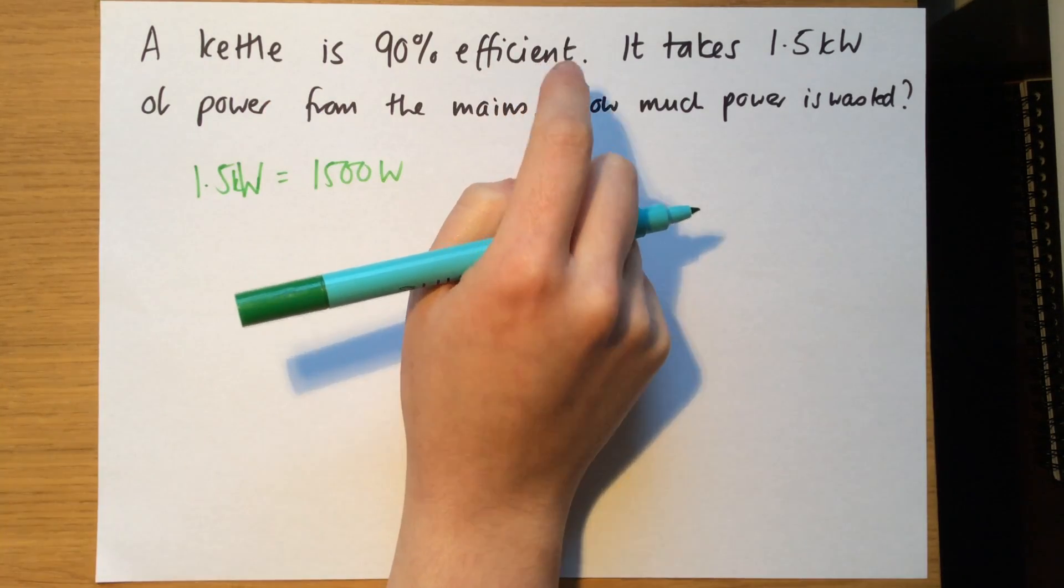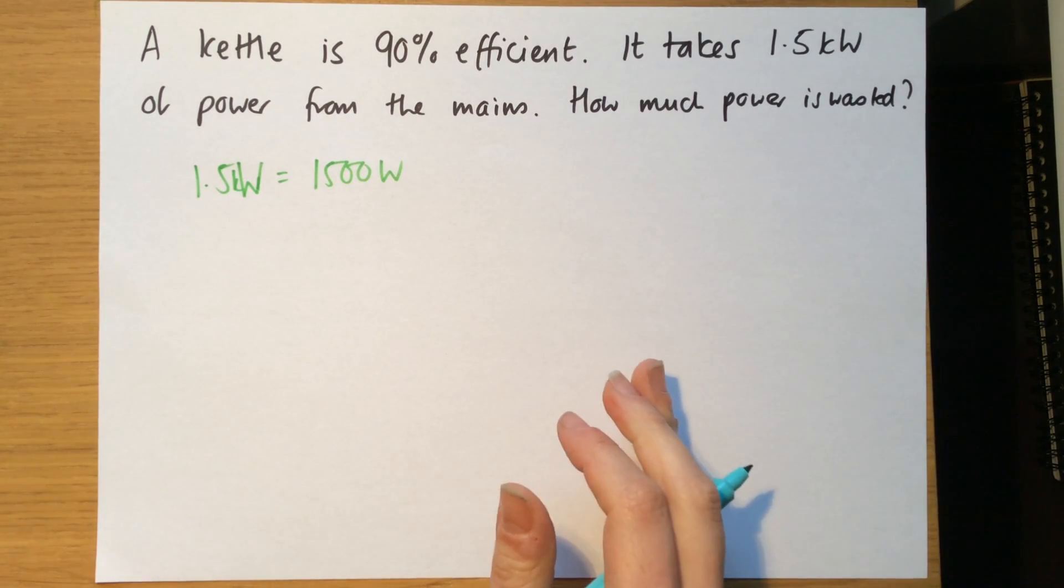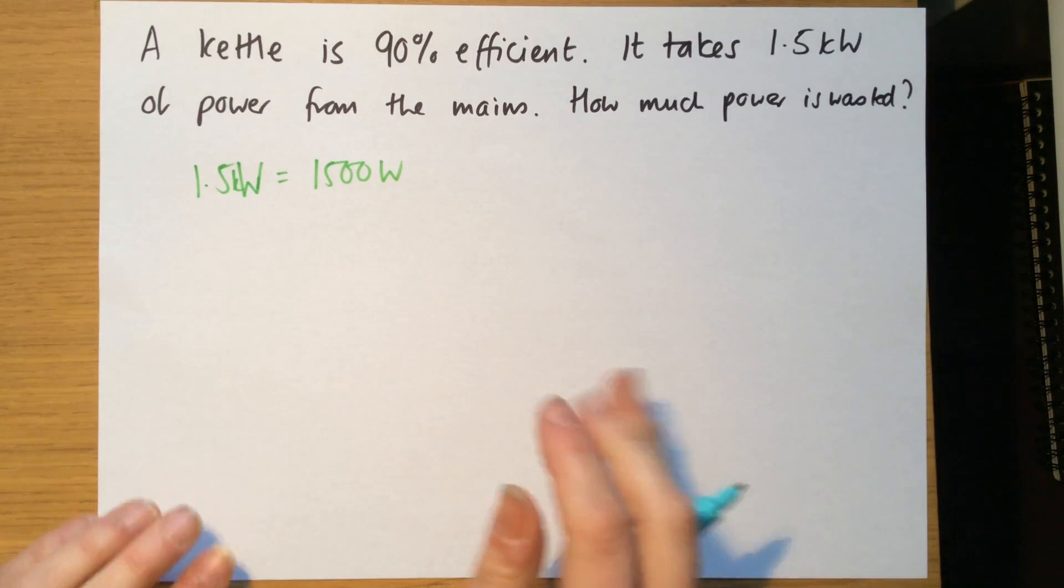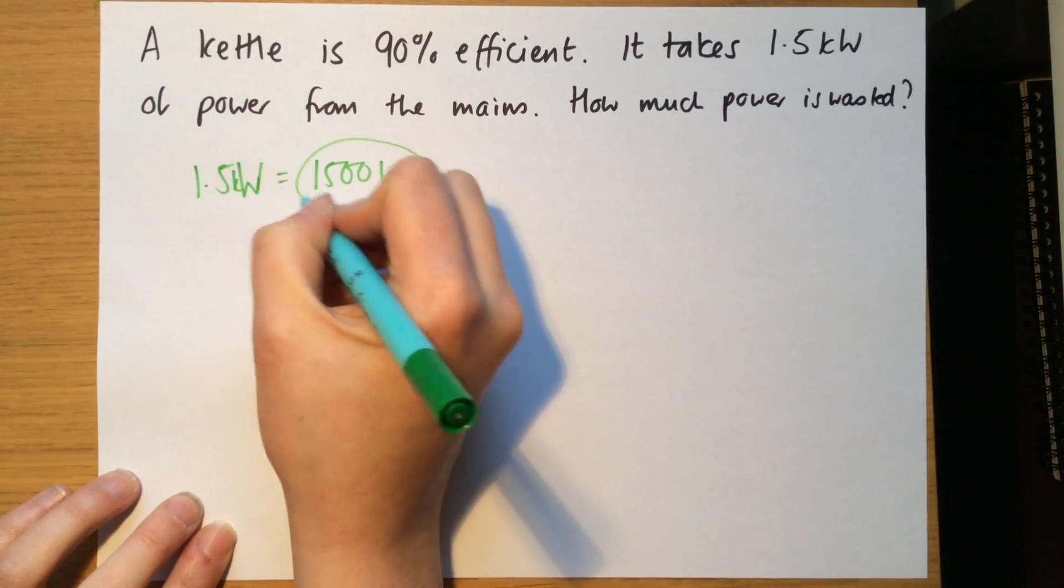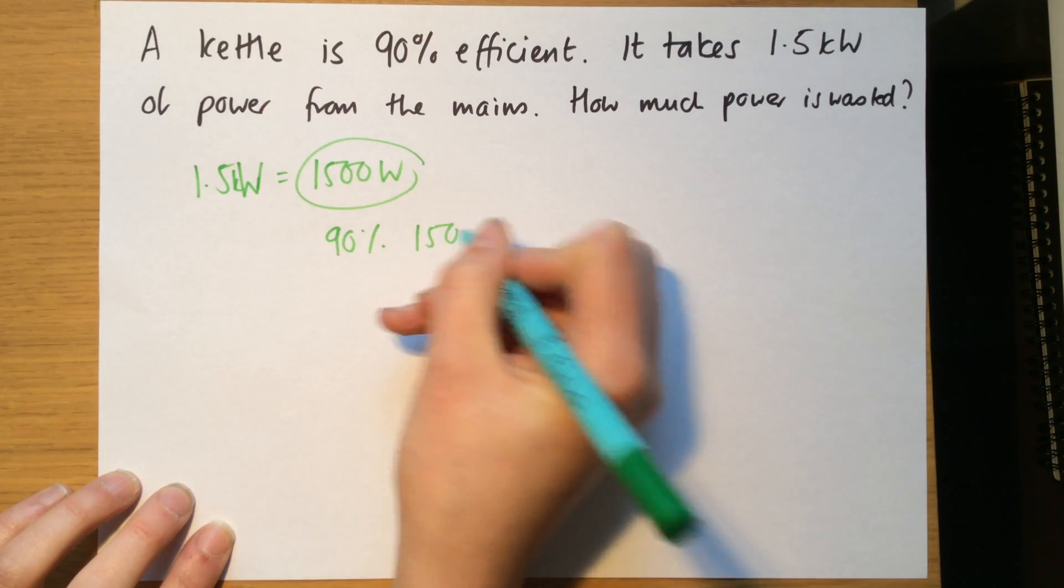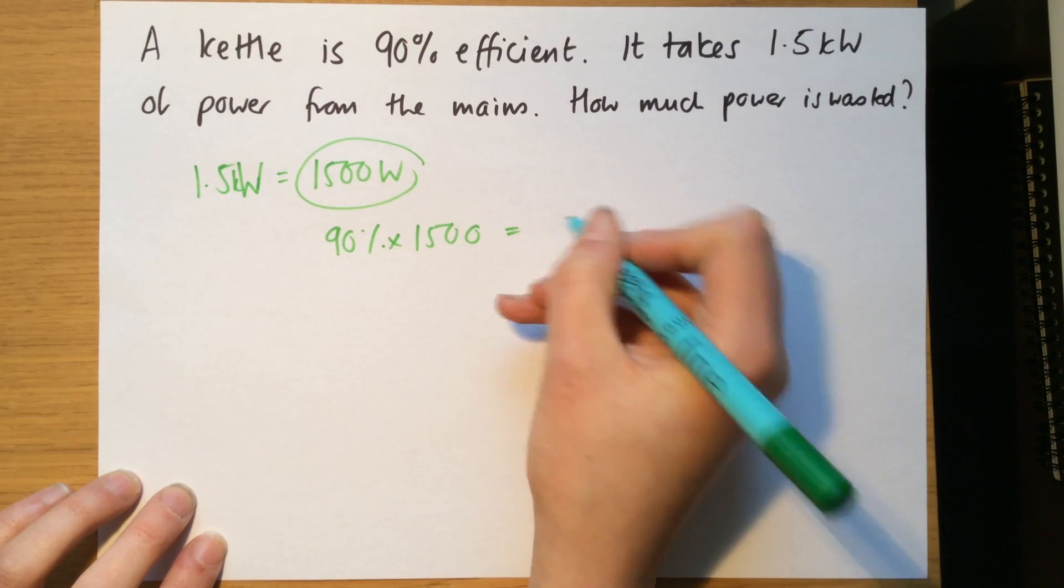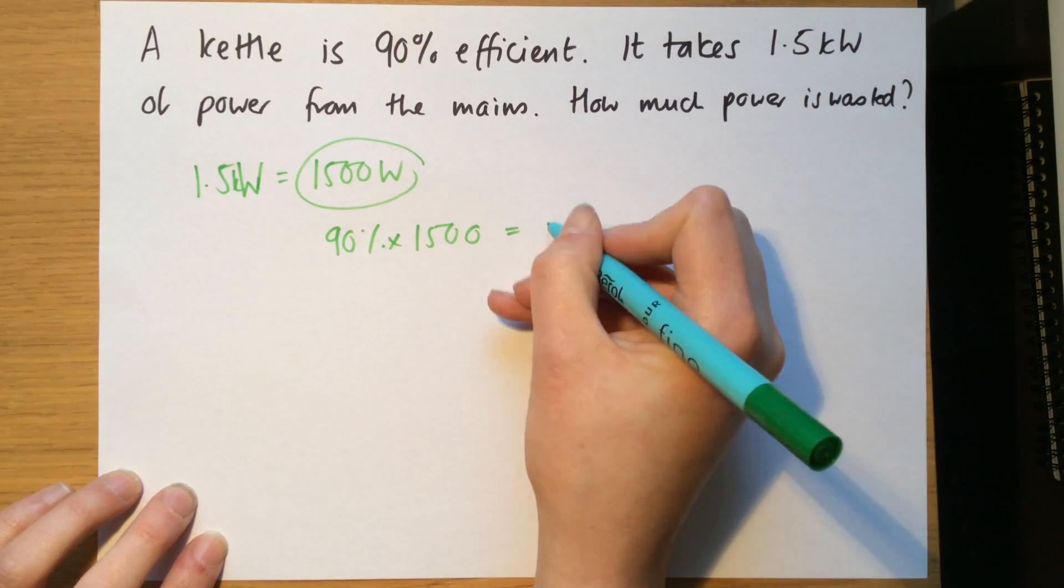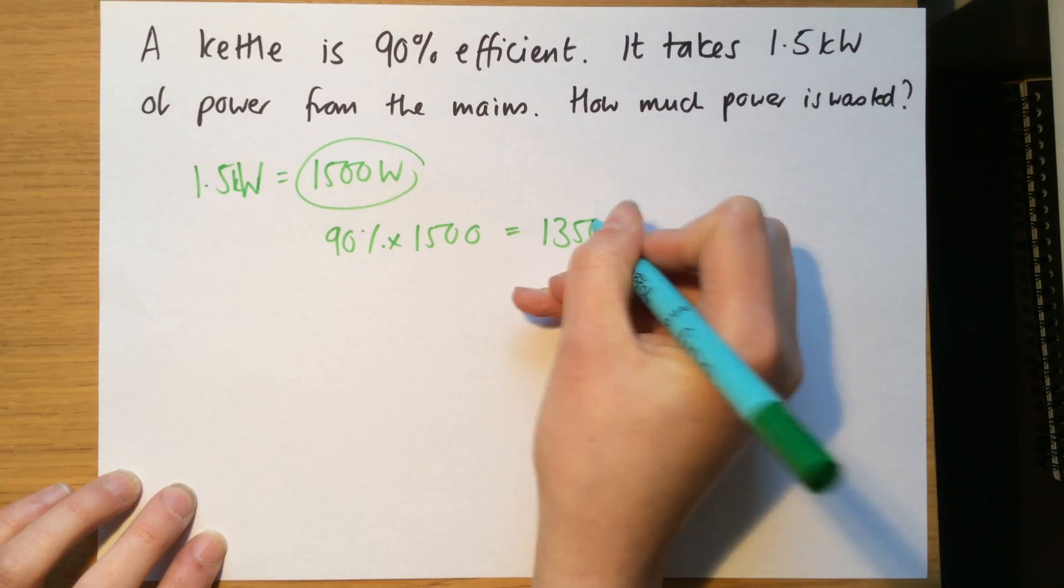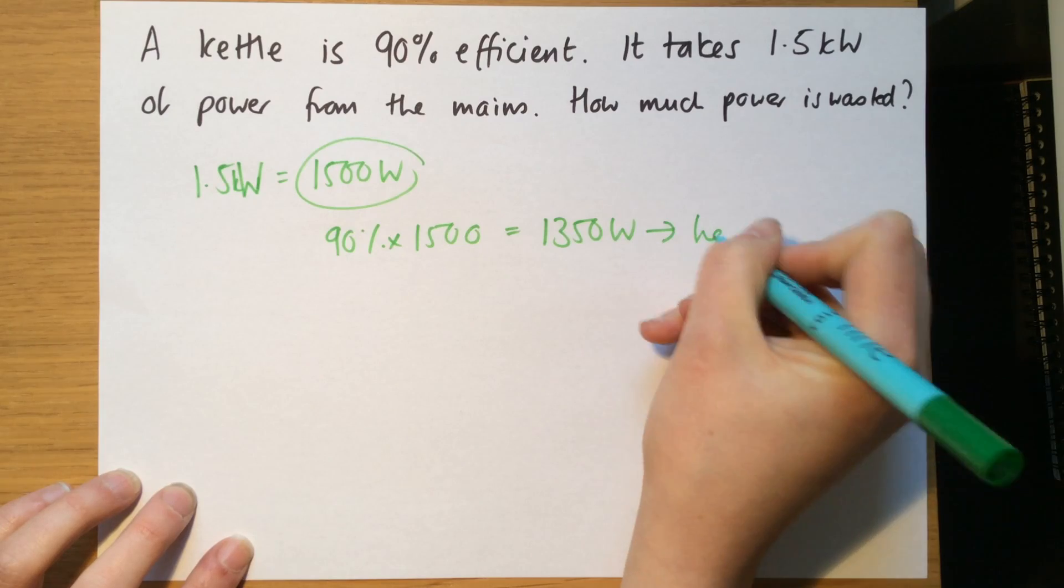Now, that's because the most normal thing to be wasted, well, the most normal type of energy that's wasted is heat. And a kettle wants heat, so it's not bad. So 90% of this power is used usefully. 90% of 1,500 is equal to about, I'll have to do this in my head very quickly, each 10% is 150, so that's equal to 1,350 watts. So 1,350 watts is used to heat up the water.